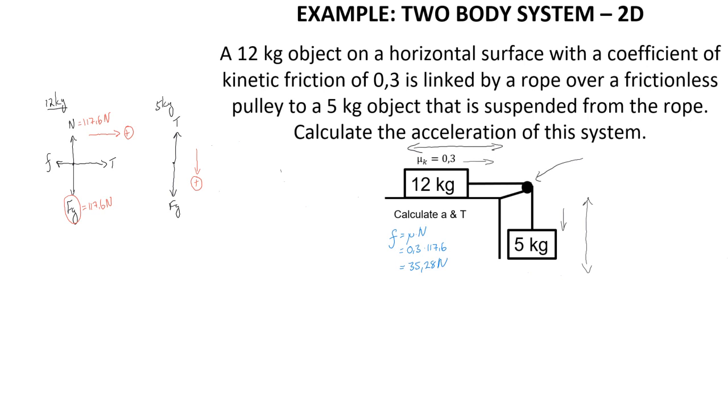We can now follow our usual approach where we write down a Newton's second law expression for each one of these objects. For the 12 kilogram object, F net is MA. F net is all the forces acting to the right, our positive direction, which is tension, minus the forces acting to the left, the negative direction, which is friction, equal to mass times acceleration. Tension is our unknown, friction we know to be 35.28, and the mass of this object given as 12.